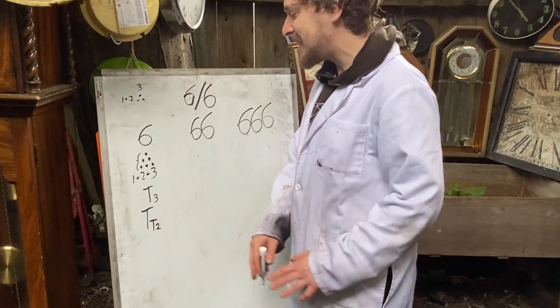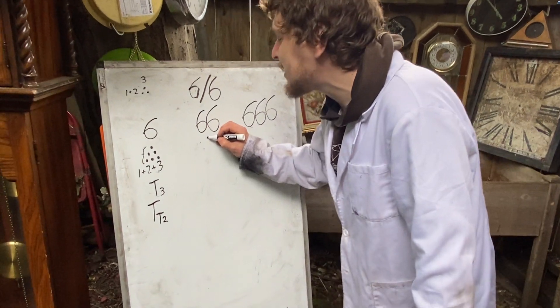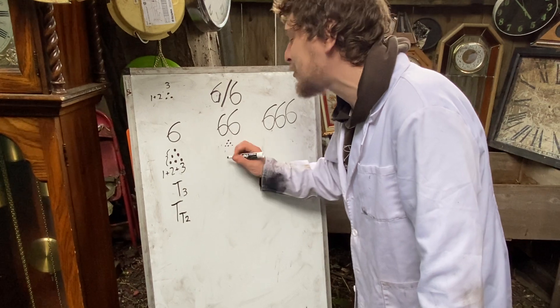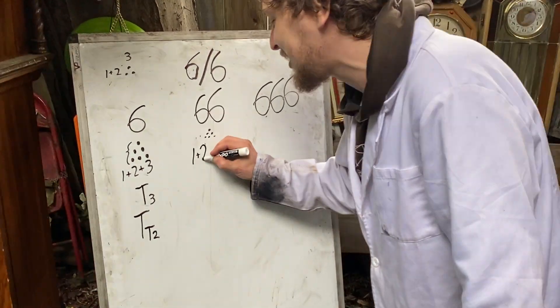Now what about 66? This one isn't doubly triangular, but okay, we're not going to draw all the dots. We'll write it out in terms of numbers.